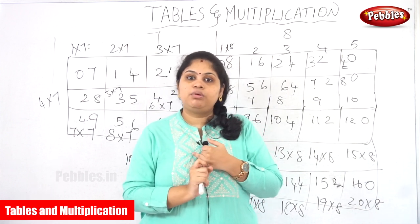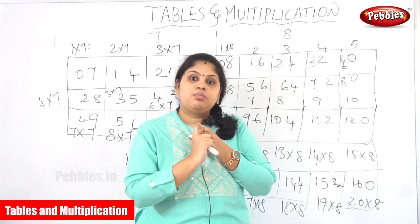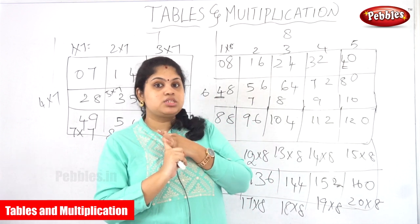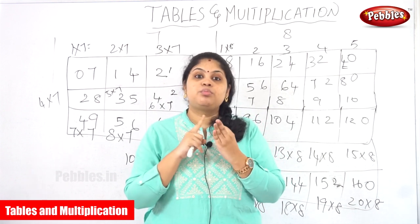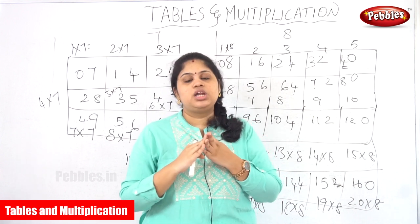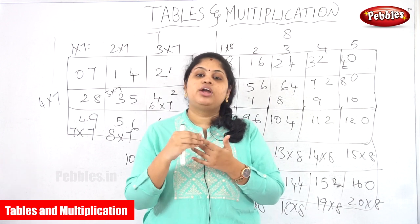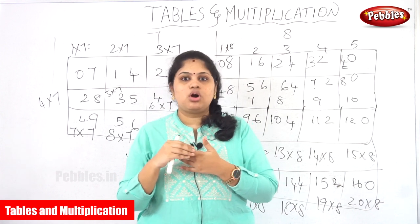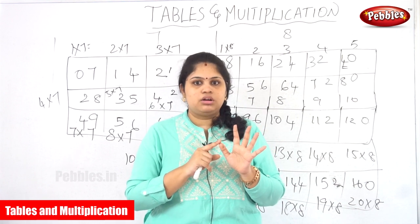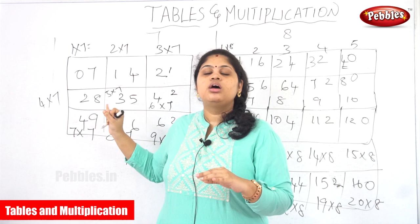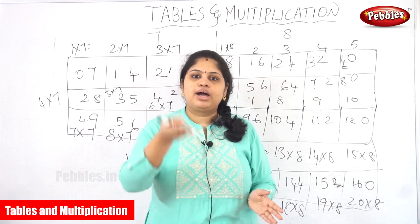How many tables have we completed? We completed two tables using the skip count method. Next, three tables were completed using the grid method — the three and fourth tables. The fourth and fifth tables were studied using the star method and the clock method respectively. The six and seven tables use the grid method. The eighth table also uses the grid method. For the ninth table: the first digit is forward counting and the second digit is backward counting.